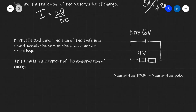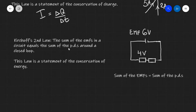Kirchhoff's second law, on the other hand, states that the sum of the EMFs in a circuit equals the sum of the PDs around a closed loop. And this law is a statement of the conservation of energy, which is really important.